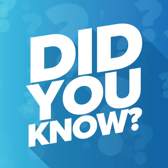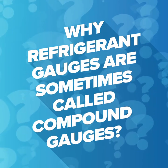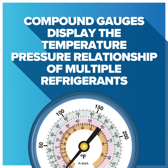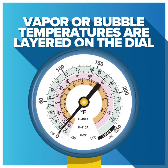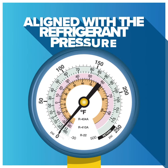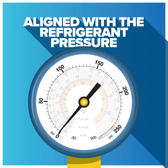Did you know why refrigerant gauges are sometimes called compound gauges? Compound gauges display temperature-pressure relationships of multiple refrigerants. It means that vapor or bubble temperatures are layered on the dial and can be aligned with refrigerant pressures, which are always displayed on the outermost set of graduated numbers of the gauge.